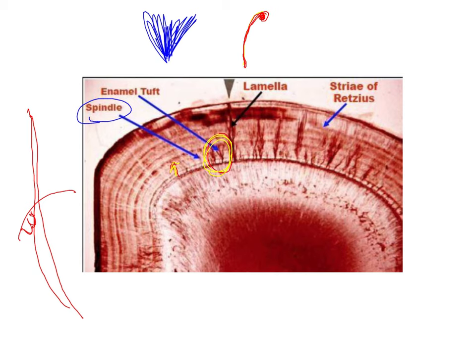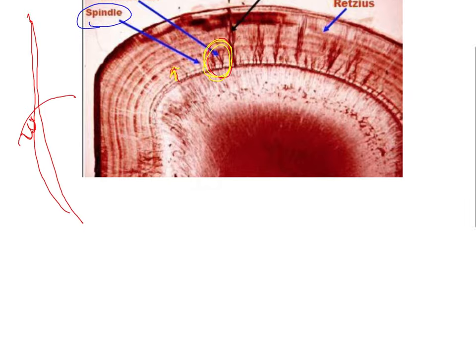Then you have what are called lamellae. Lamellae are nothing but vertical lines that extend from the outer surface of the enamel towards the inner surface of the enamel. At times it is very difficult to differentiate between a lamellae and a crack. It is considered that most of the lamellae you see are actually nothing but cracks in the enamel.